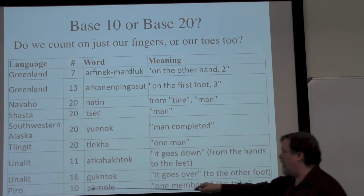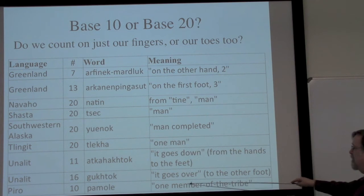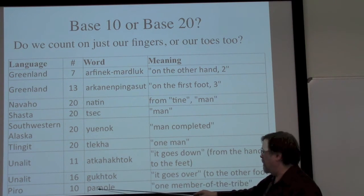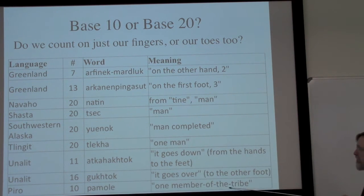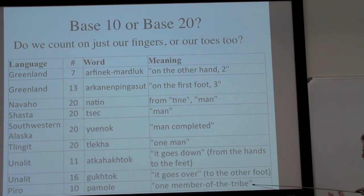The Pira, on the other hand: the number ten translates as 'pa' meaning one, and 'mule' meaning a member of the tribe — essentially saying there's a base ten, where once we've gotten to ten, we've gotten an entire person.